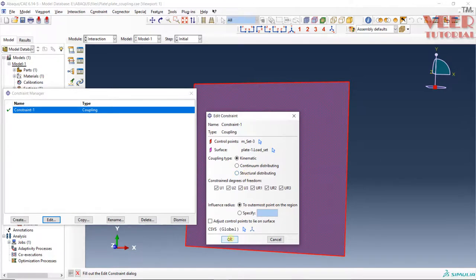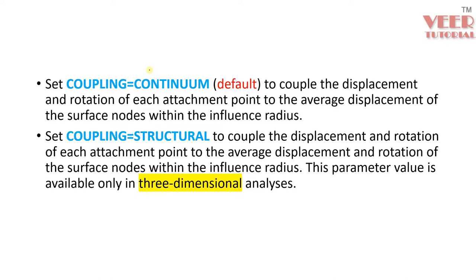Let's understand the meaning of these options. We already know the meaning of Kinematic Coupling. In Distributed Coupling, there are two options: Continuum Coupling and Structural Coupling. The basic difference is that Structural Coupling is used when we have 3D shell elements, while for other types of elements we use the Continuum Coupling option.